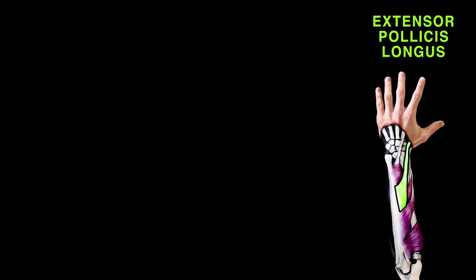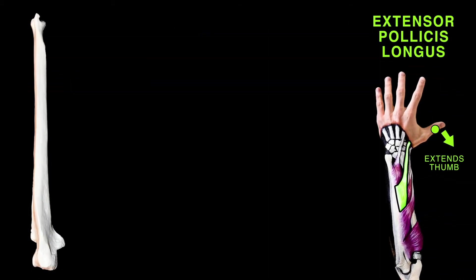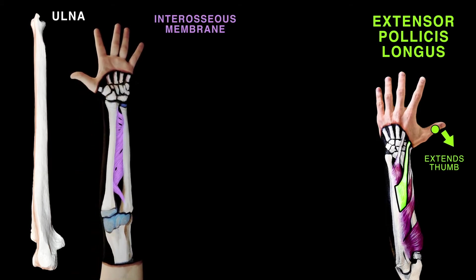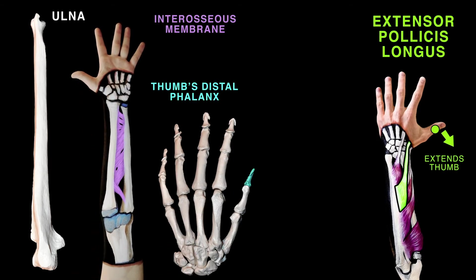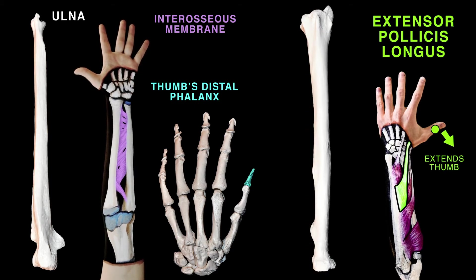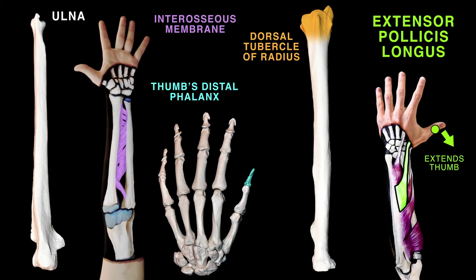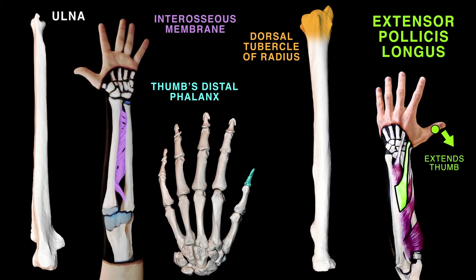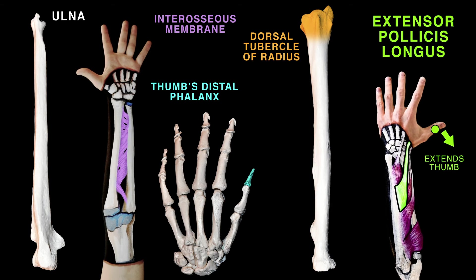Extensor pollicis longus originates from the posterior surface of the ulna and interosseous membrane, and attaches to the thumb's distal phalanx. Its tendon travels medially to the dorsal tubercle at the wrist. The extensor pollicis longus extends all of the thumb's joints: carpometacarpal, metacarpophalangeal, and interphalangeal.